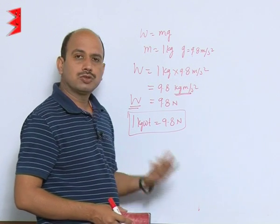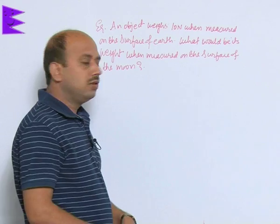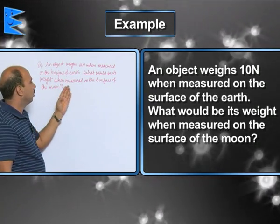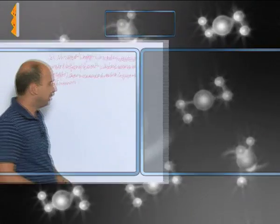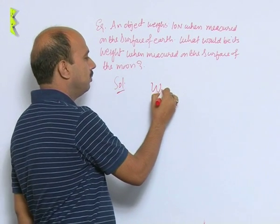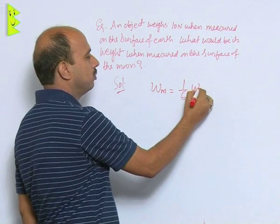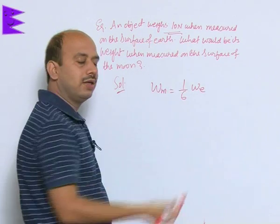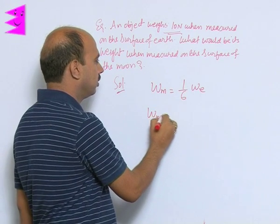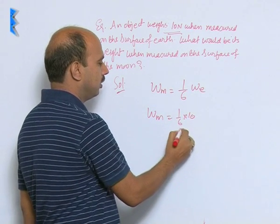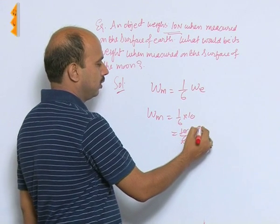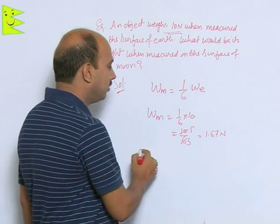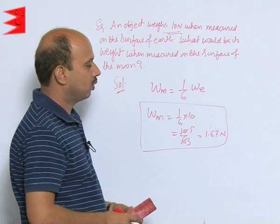Now one more example related to mass and weight: an object weighs 10 Newton on the surface of the earth — what would be its weight on the surface of the moon? This is straightforward: W_m equals 1/6 of the weight on earth. The weight on earth is 10 Newton, so W_m equals 1/6 times 10 equals 10/6 equals 5/3, which is approximately 1.67 Newton. So the weight on the moon is 1.67 Newton.